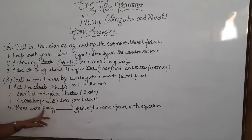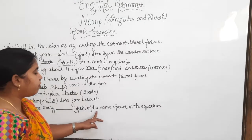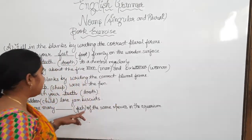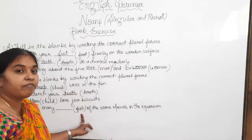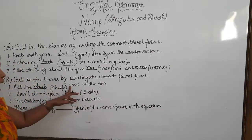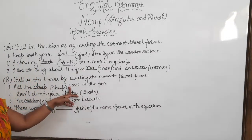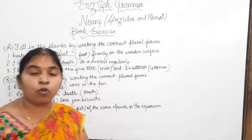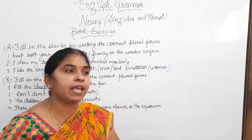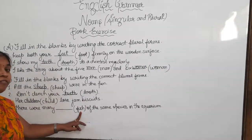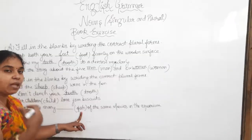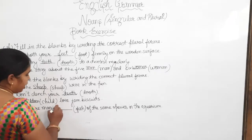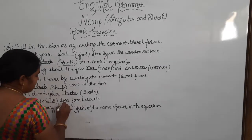Next: 'There were many dash of the same species in the aquarium.' In the bracket, the word is 'fish.' As per the rule we have learnt, in some nouns the singular and plural are the same. Here fish is singular and the plural of fish is also 'fish.' So here we will write F-I-S-H.